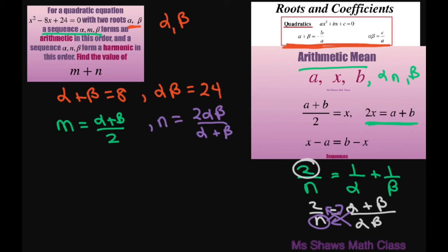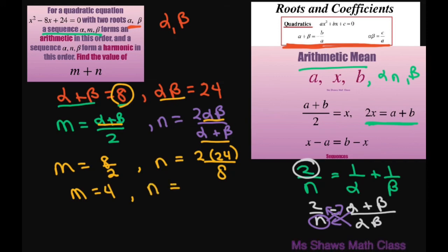Now that we have that, we know that alpha plus beta is 8. So m equals alpha plus beta divided by 2, which is 8 divided by 2. And n equals 2 times alpha beta divided by alpha plus beta, which is 2 times 24 divided by 8. So m is 4 and n is 6.